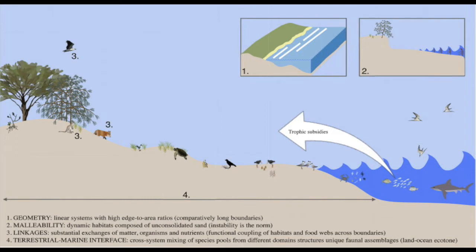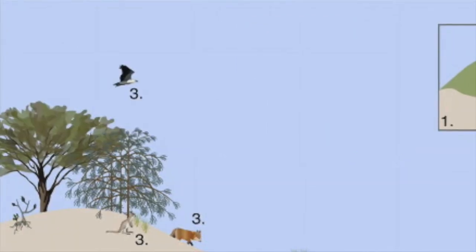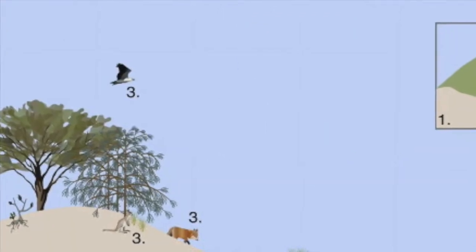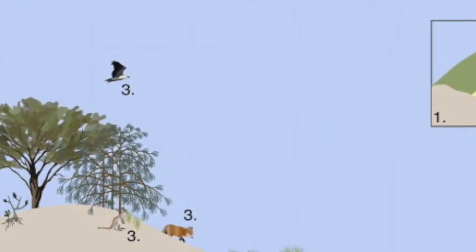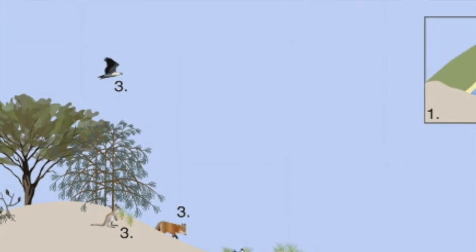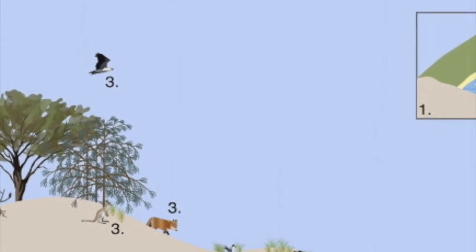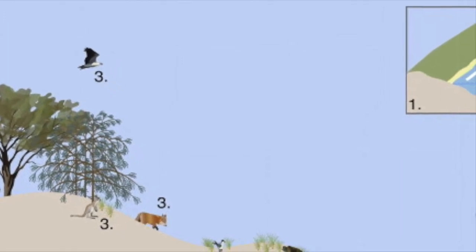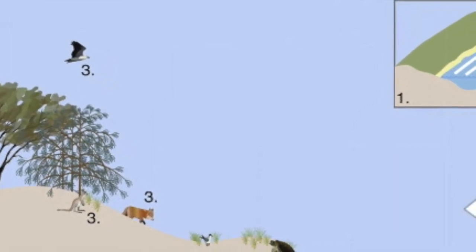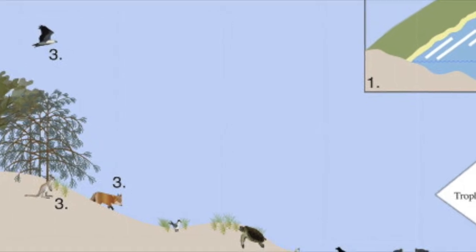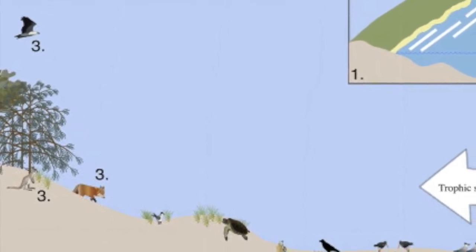As a fauna, the sandy beach can be split up into four different zones, each with their own inhabitants. From the furthest inland zone to least, the dunes of the sandy beach are inhabited by snakes, opossums, tortoises, raccoons, and beetles.